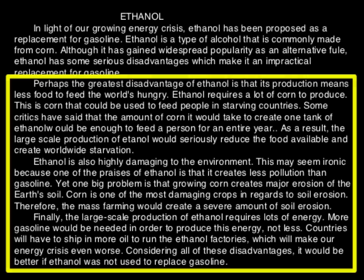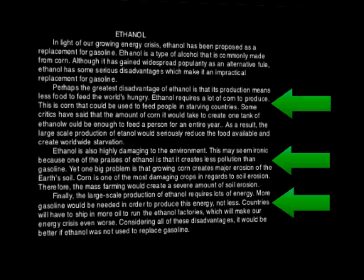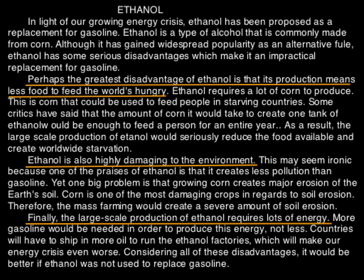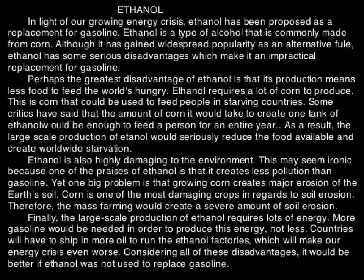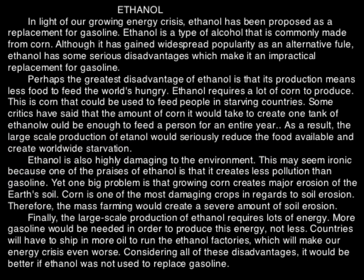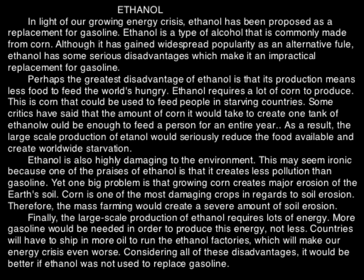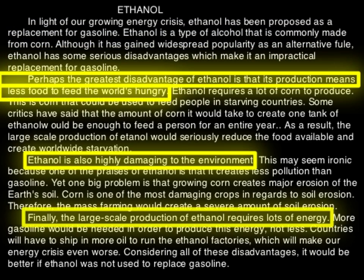Next, you will begin to read the body of the article. Be careful to pay close attention to the reasons the author gives to support his or her main idea. There should be one main reason for each body paragraph. Can you see the three major reasons written here? The first sentence of each paragraph gives you the main reasons. In paragraph one, the first reason is ethanol's production means less food for the world's hungry. In paragraph two, ethanol is damaging to the environment. And in paragraph three, its production requires lots of energy. This is how most articles are organized: the main idea as the last sentence of the introduction, and the major reasons as the first sentences of the body paragraphs.